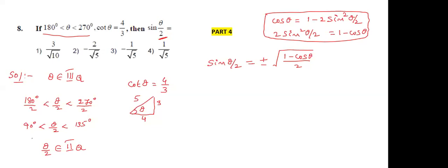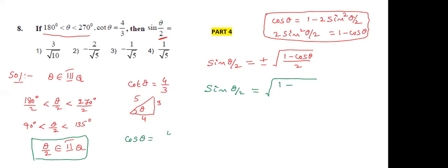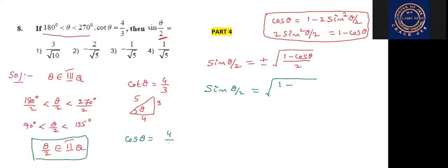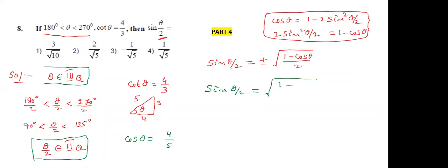Now observe that θ/2 belongs to the second quadrant. In the second quadrant, sine is positive, so we take the positive square root: +√((1 − cos θ)/2). What is cos θ here? Cos θ is 4/5, but since θ belongs to the third quadrant, cosine is negative. So cos θ = −4/5. Substituting: √((1 − (−4/5)) / 2).